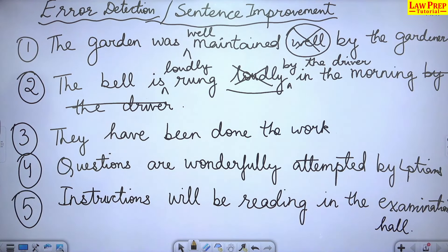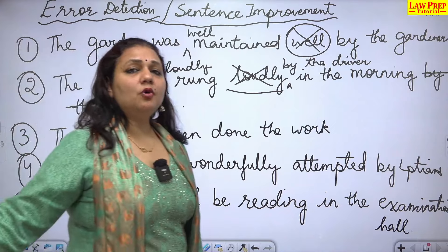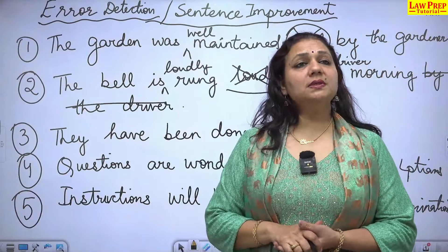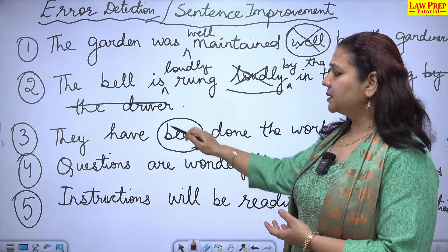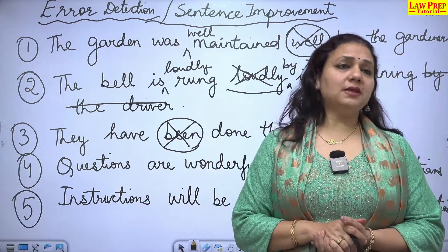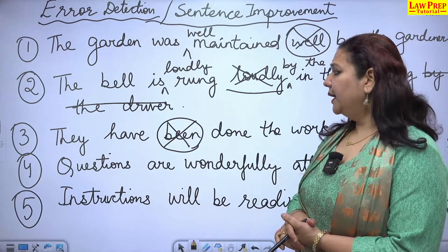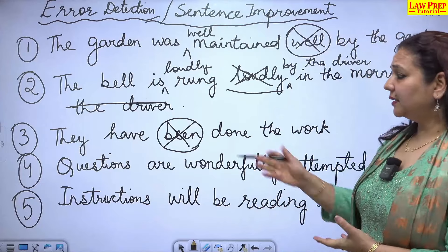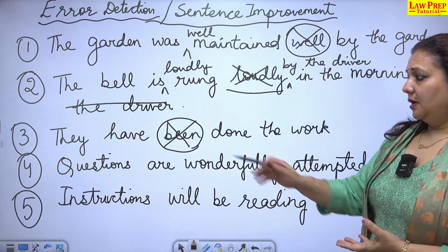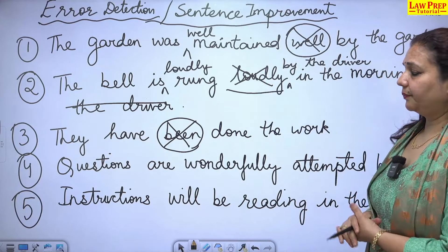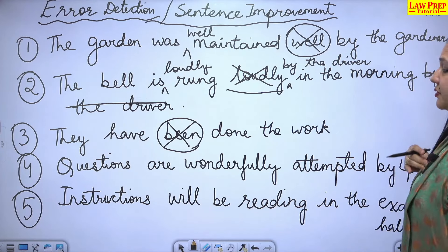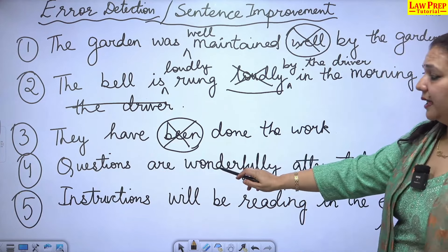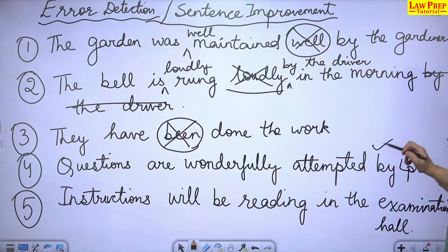Question 3: 'They have been done the work' — if 'they' is the subject, they are the doers of the action. We cannot use 'been' when the subject comes first. The correct sentence is: 'They have done the work.' Question 4: 'Questions are wonderfully attempted by LP Twins' — object, helping verb, adverb of manner, V3 — sentence is correct, no error.